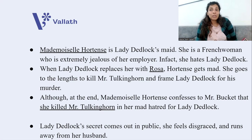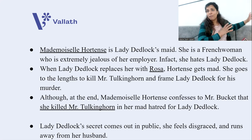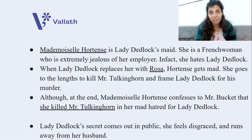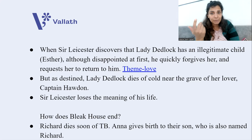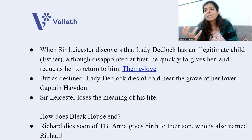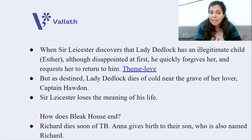After this, Lady Dedlock's secret comes out publicly — that she had a baby out of wedlock named Esther, who is very much alive and working as a governess at Mr. Jarndyce's house. Lady Dedlock is publicly disgraced and runs away from her husband Sir Leicester. Sir Leicester, who loves his wife deeply, is disappointed at first but quickly forgives her and requests the policeman Mr. Bucket to help find her. The theme here is love.